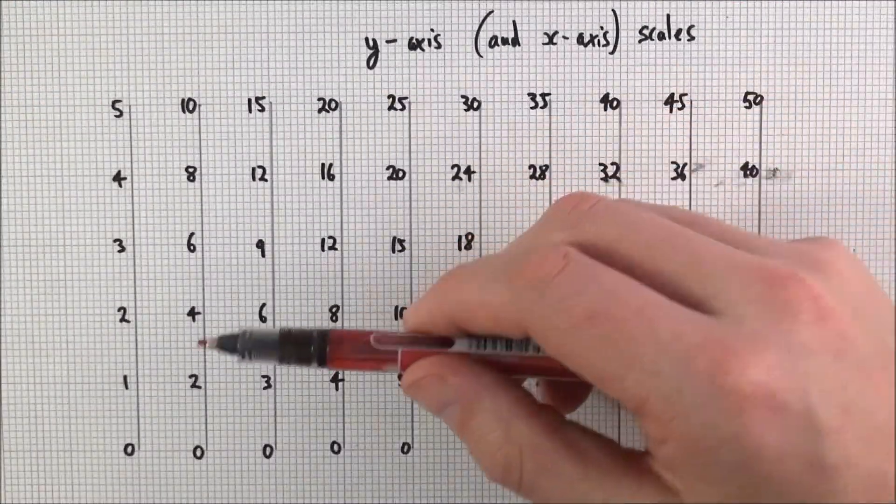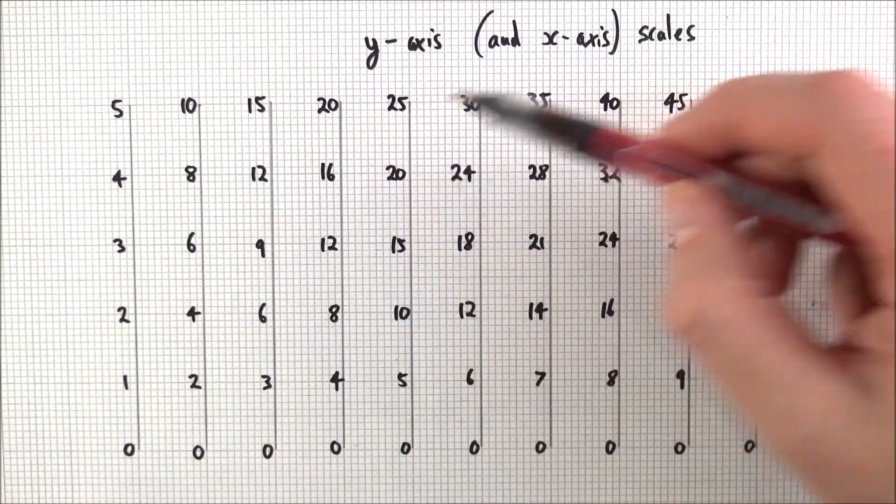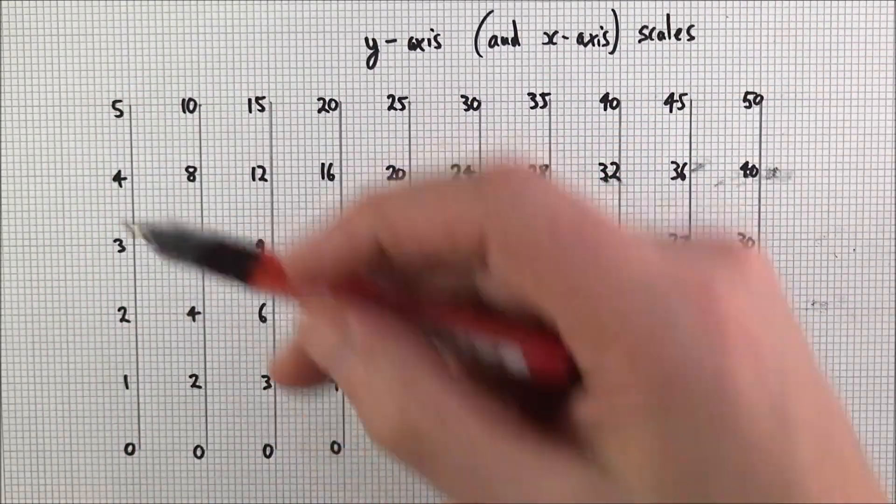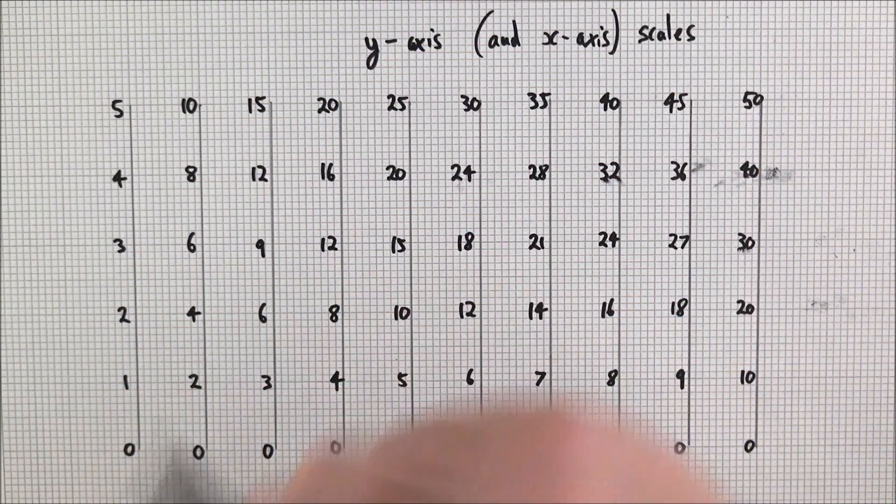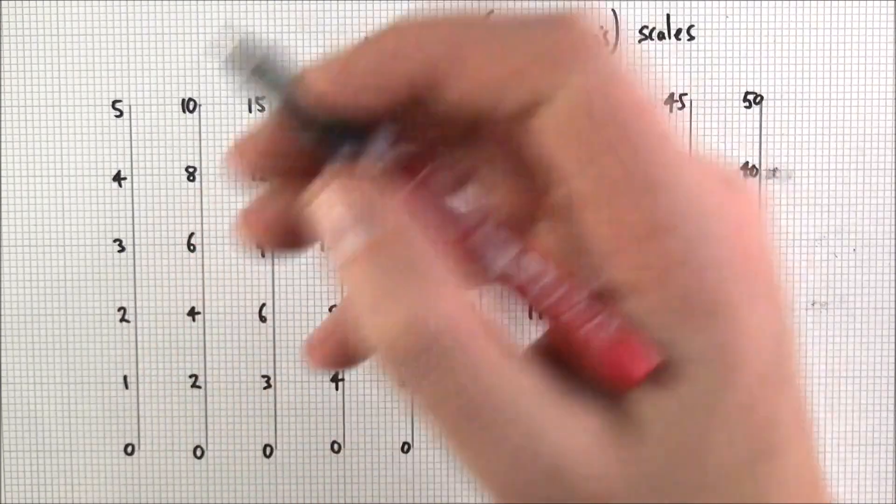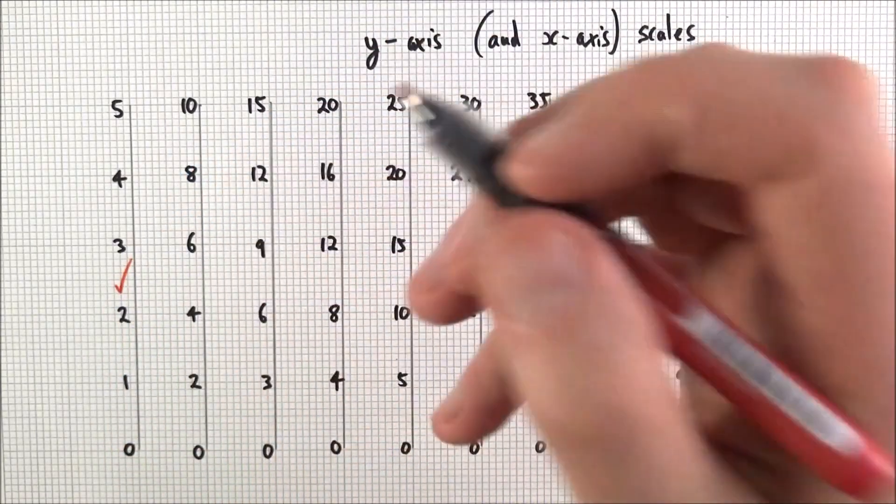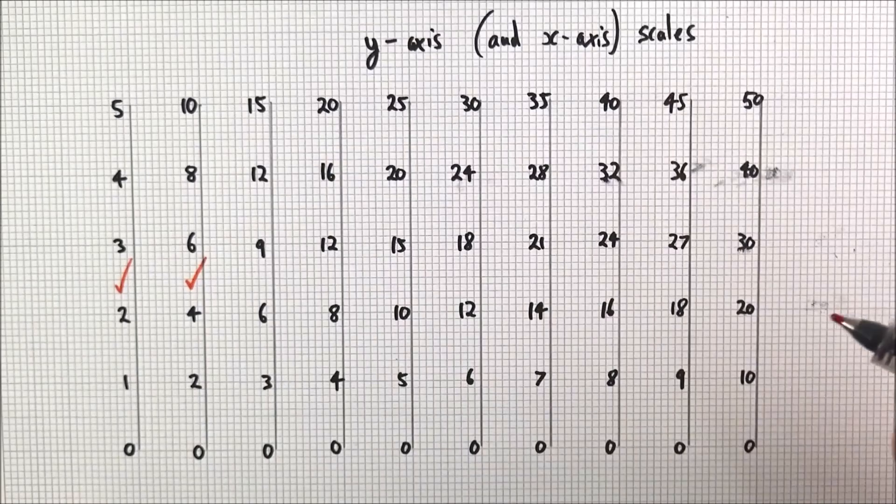Now when it comes to your axes and actually what you put on both the y and the x axis, when it comes to labeling you need to make sure that you go up in appropriate units. So if you go up 0, 1, 2, 3 that's all very good. If you go up in 2, 4, 6, again going up in 2's is absolutely fine.